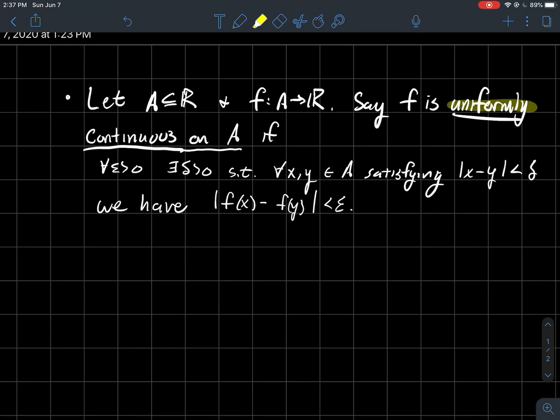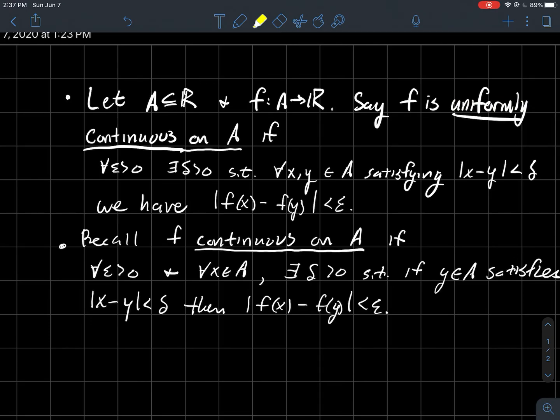Now, what I want to do is, on the same screen, I want to write right below this, what was the definition of us being continuous on A? So recall that f is continuous on A without that adjective uniformly.